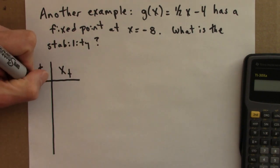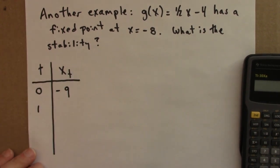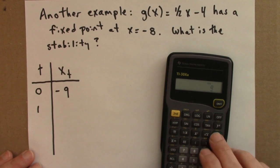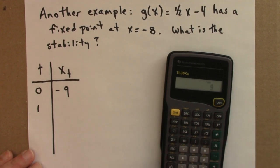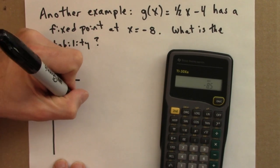So I'll choose a seed of minus 9. What's my next value? The function tells me that I take 9, minus 8.5.